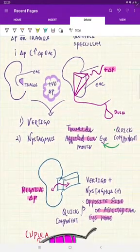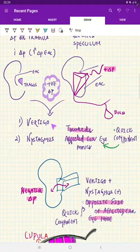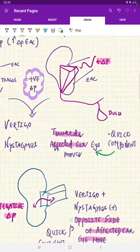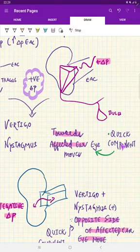Now, because of the positive pressure, what will happen? As simple, the person is going to say vertigo, he is experiencing vertigo, and we can notice the nystagmus. And remember again, it is the nystagmus where we can see the quick component towards the affected ear. Remember: positive and towards.